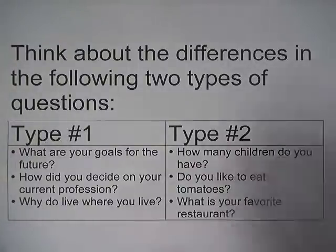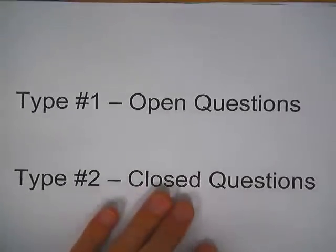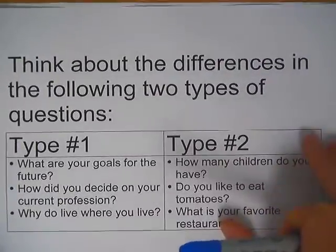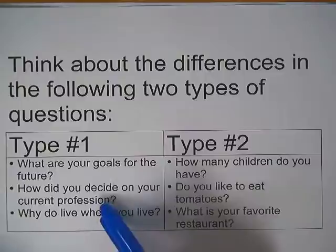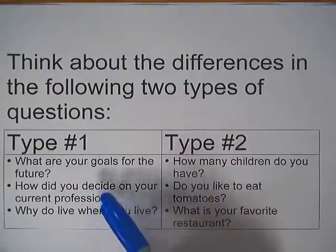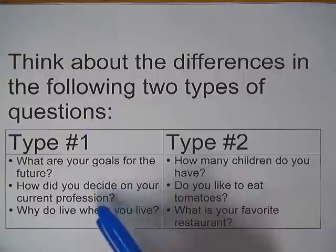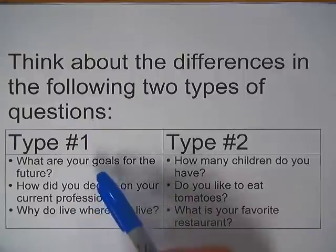Both of those two question types are obviously pretty different. Type 1 are your open questions, sometimes called open-ended questions. They're open because you're going to give lengthier responses — the predictability is going to be a lot less when you have open questions.